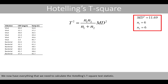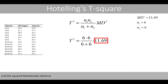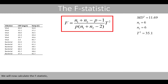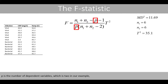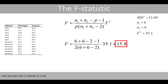We now have everything needed to calculate the Hotelling's t-squared test statistic. We plug in the sample size of both groups — which is 6 in our example — and the squared Mahalanobis distance. The Hotelling's t-squared test statistic is equal to 35.1. We then calculate the F-statistic, where n1 and n2 are the sample sizes of the two groups, p is the number of dependent variables (which is 2 in our example), and this is the Hotelling's t-squared test statistic. Plugging in all the values, we calculate the F-statistic to be 15.8.